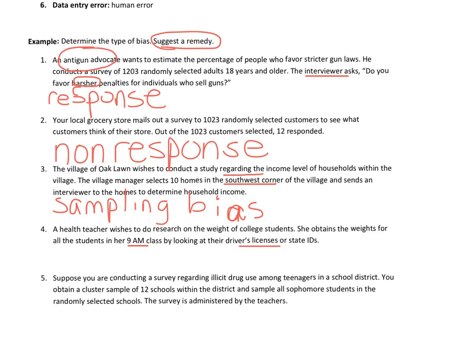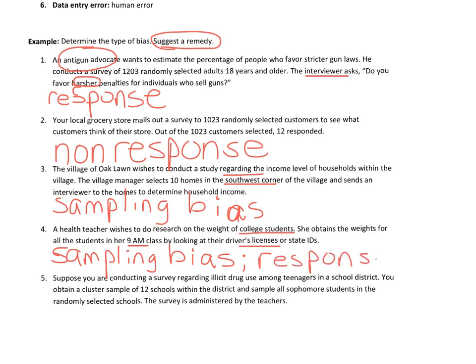Number four: a health teacher wants to research the weight of college students. She obtains weights for all students in her 9 a.m. class by looking at their driver's licenses. A couple of things: since she's sampling only one class, there's some sampling bias — a convenient sample. Also, the weight on a driver's license isn't current — at the DMV there's no scale, you just tell them your weight, and people tend to shave off a few pounds. So there's response bias as well. The remedy: sample students from all times of day and actually weigh them with a scale.